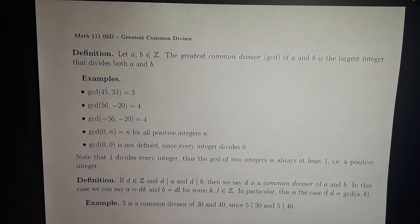Since 1 divides every integer, the GCD of 2 integers is always at least 1 — in other words, a positive integer.